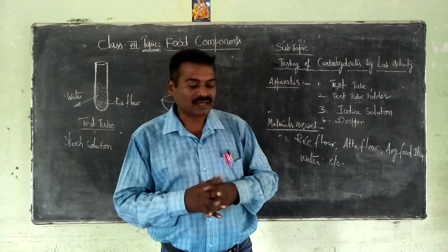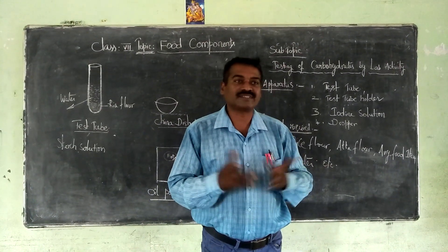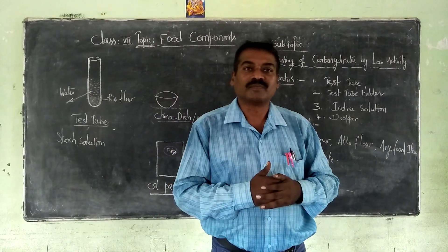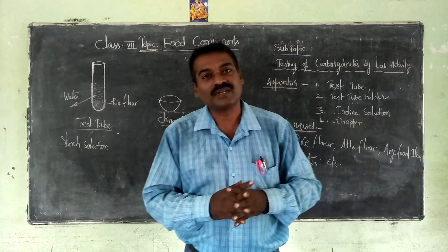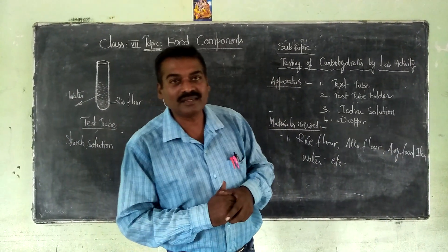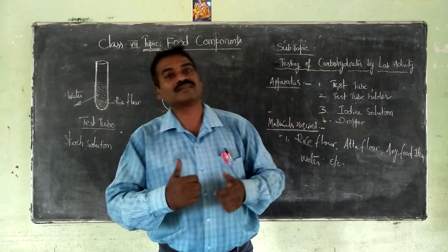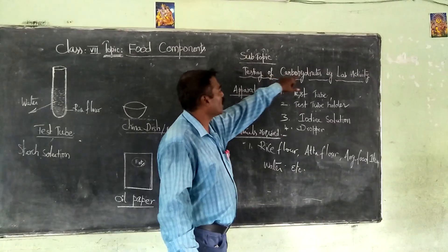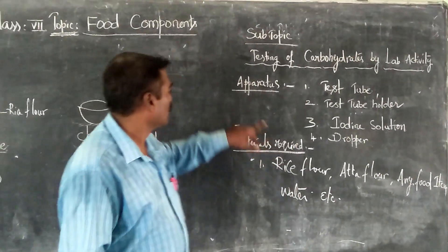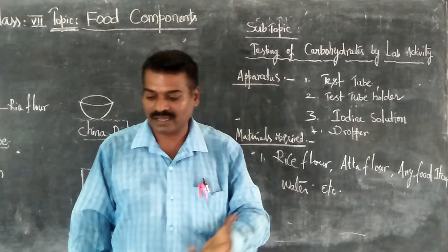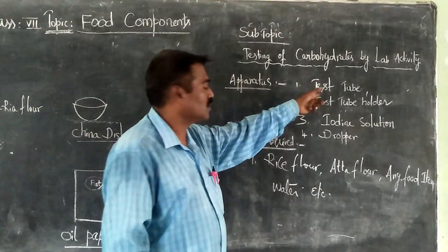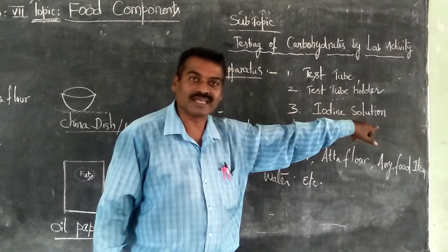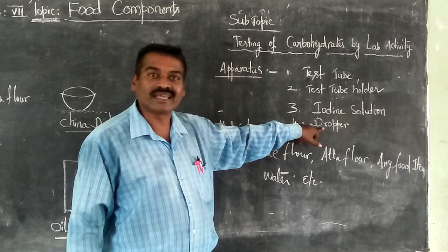Now let us introduce the requirements and apparatus. First of all, arrange things properly before doing the activity. The apparatus we require: a test tube, a test tube holder to hold the solution for testing, and a dropper. Let us see all the requirements for testing carbohydrates by lab activity.